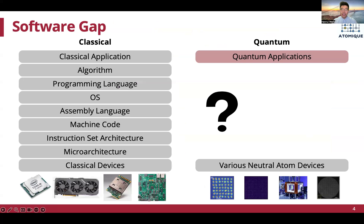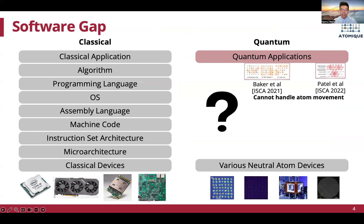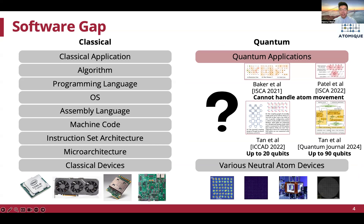Similar to multiple software layers in classical computing, it is critical to fill the software gap for neutral atom devices to benefit from fast hardware development and good physical characteristics. There has been several pioneering work developing compilers for fixed atom arrays, but they cannot handle atom movements. Some other pioneering work can handle both fixed and movable atoms but are not scalable to quantum programs with over 100 qubits. To fulfill the requirements of a scalable compiler for both fixed and movable atoms, we develop the Atomic compiler in this work.